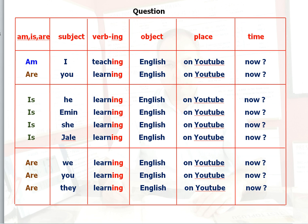Now, at the end of this lesson, let's look at how we will make the question form of this tense. We will change the place of the helping verbs am, is, are, and put them in front of the subject, as you see in this picture.